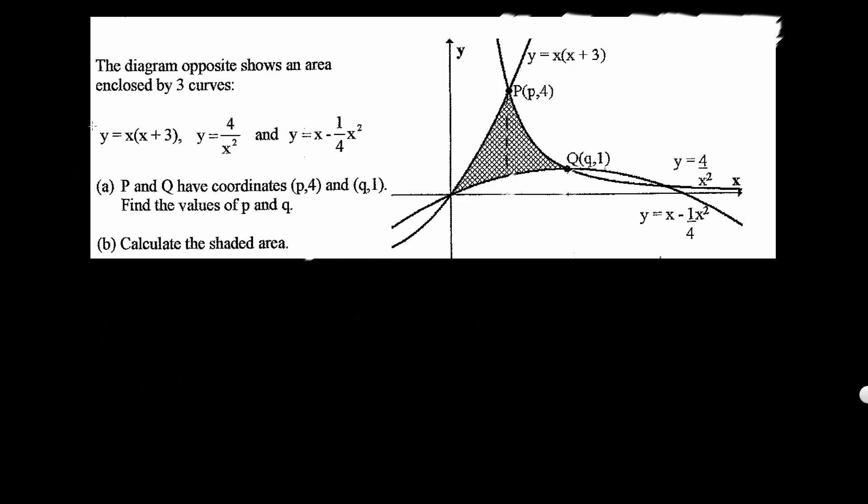I'm going to number these equations. So number one, that equates to this graph right here. Number one, it's already labeled, but number two, I'll use different color. Number two graph is y equals 4 over x squared, which is this graph right here. Number three graph, this graph right here. That's number three.